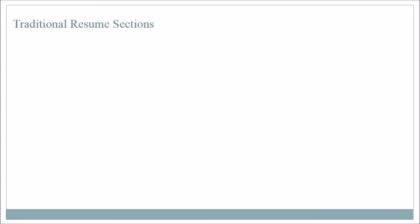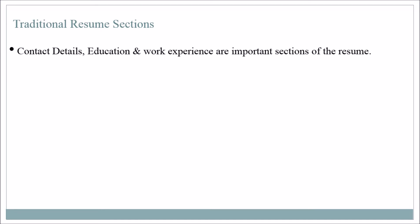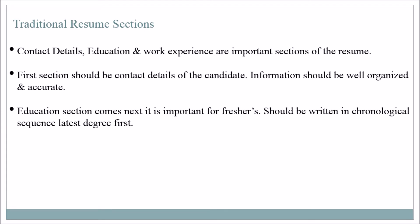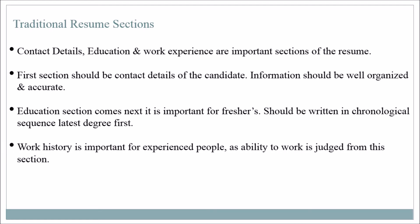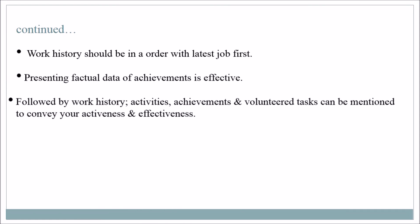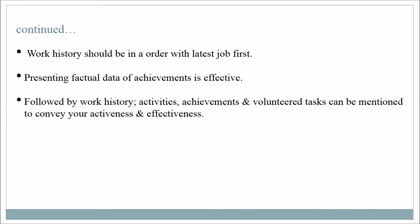Traditional resume sections: Contact details, education, and work experience are the important sections of a resume. The first section should be contact details, which should be well organized and accurate. The education section comes next and is important for freshers — it should be written in chronological sequence with the latest degree first. Work history is important for experienced people and should be in order with the latest job first. Presenting factual data of achievements is effective. Followed by work history, activities, achievements, and volunteered tasks can be mentioned to convey your activeness and effectiveness. Personal information should be added only when required.